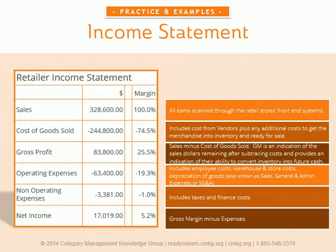Net income generally represents the company's profit after all expenses, including financial expenses, have been paid. This number is often called the bottom line and is generally the figure people refer to when they use the word profit or earnings. In this example, it's a total net income of $17,019 with a 5.2% net margin. If the net margin is below zero, there's a net loss, or the retailer was unable to operate profitably.